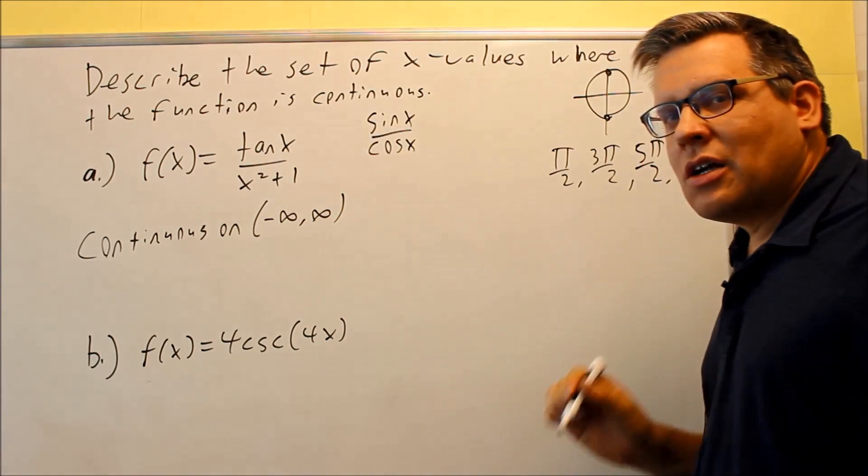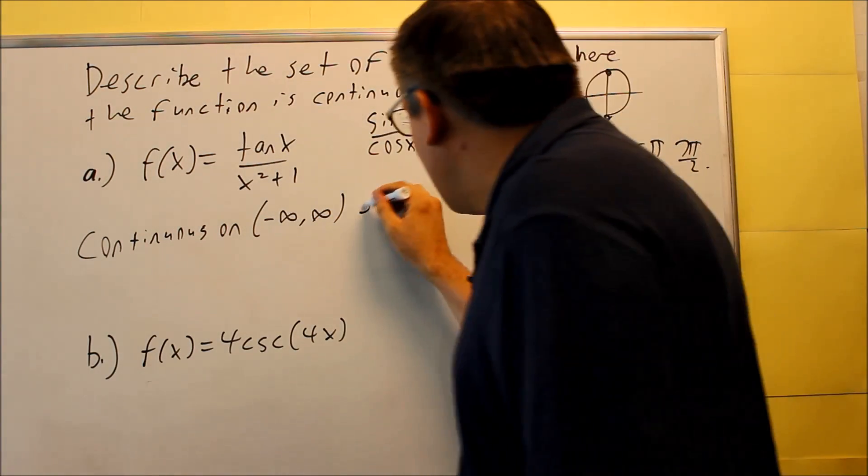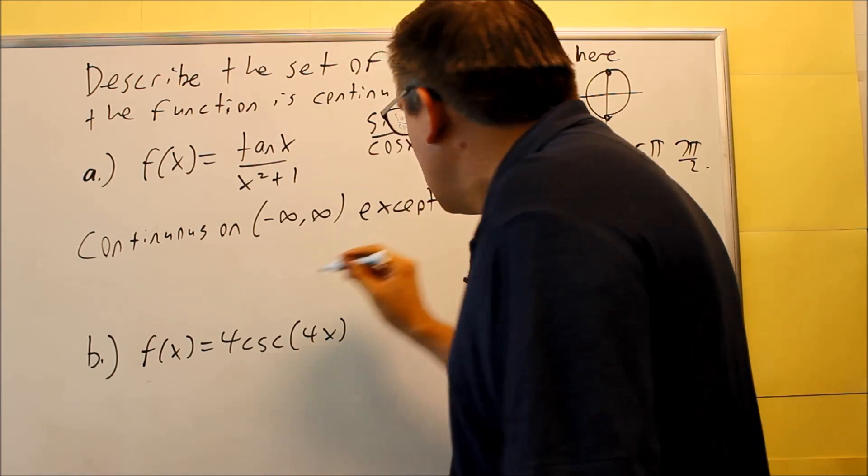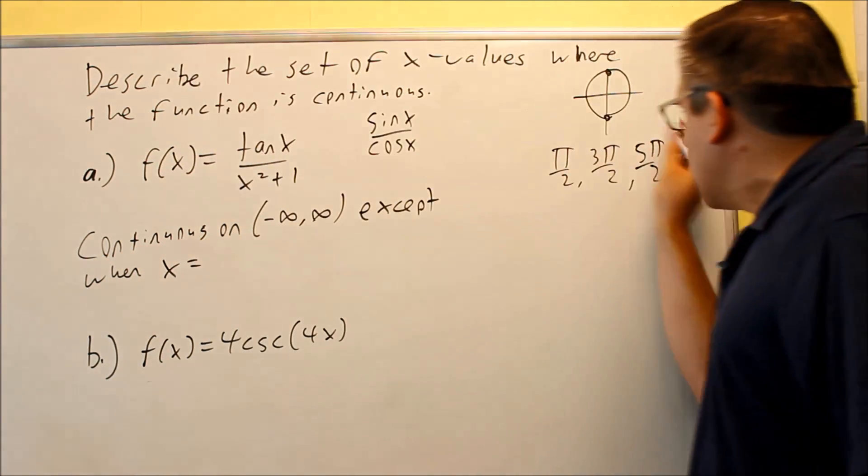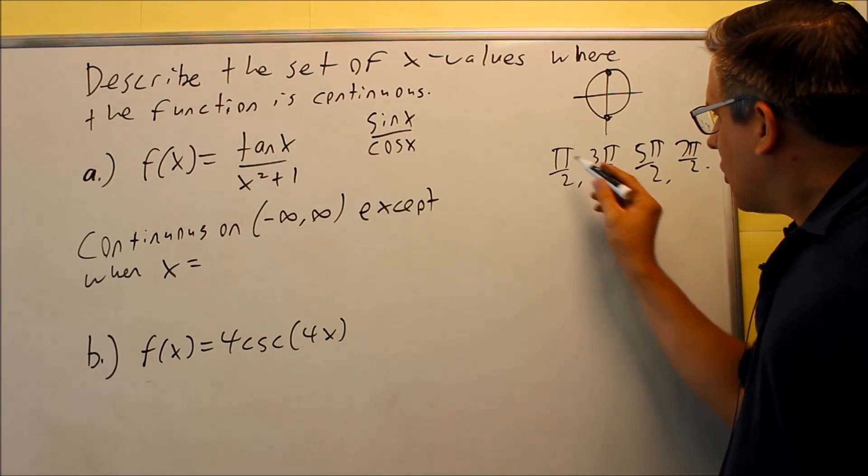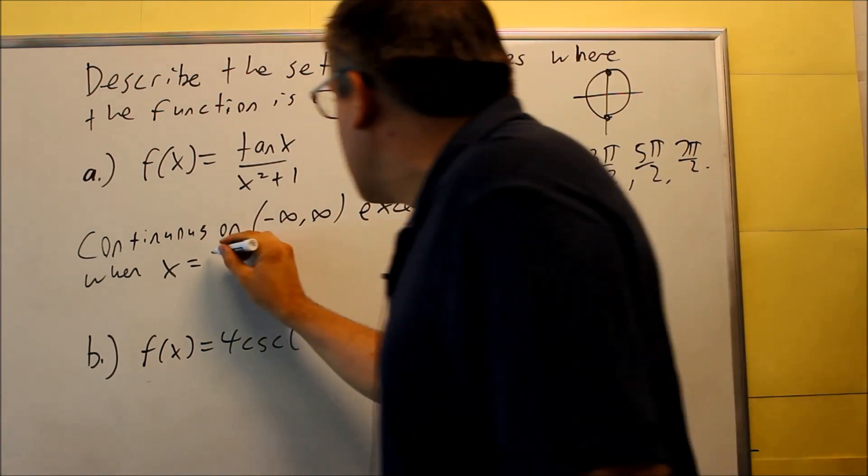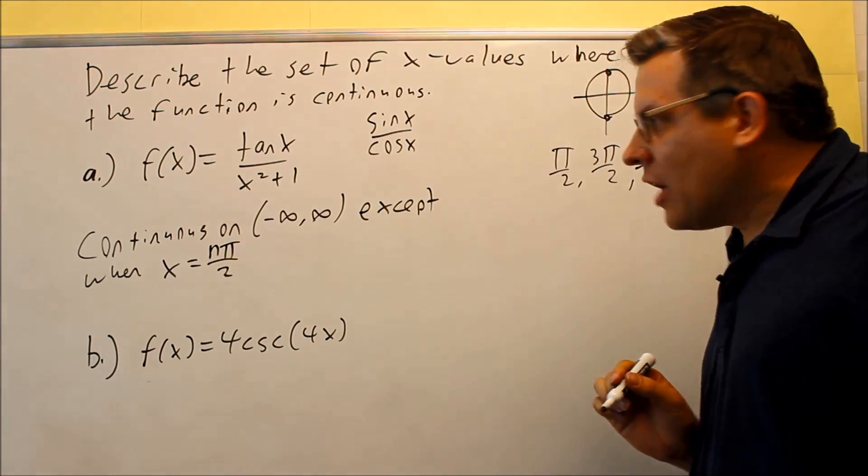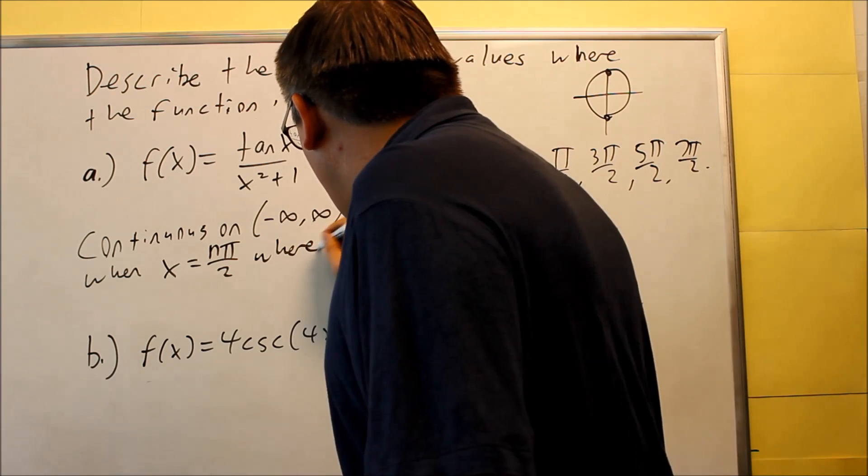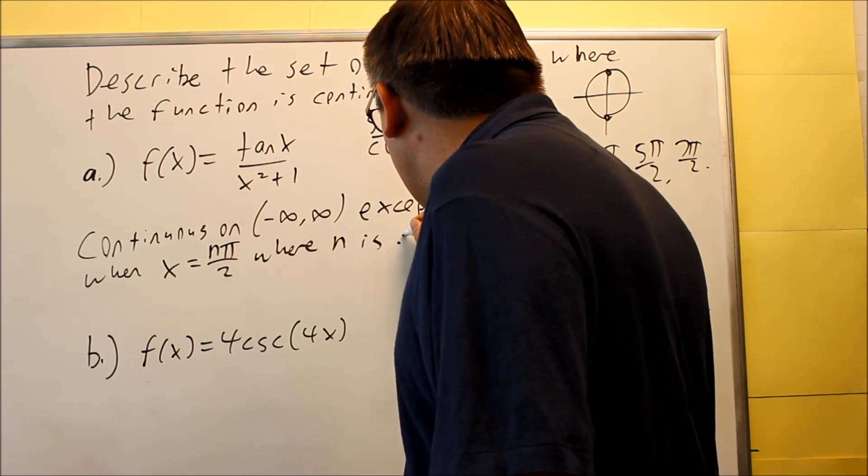You're going to say that it's continuous on negative infinity to positive infinity. So basically, I can say I'm including all values except for, except when x equals, I've got to describe this in the general case. So we're saying that we're talking about odd numbers over two. We're going to use an n here, so I'm going to write this as n pi over two,